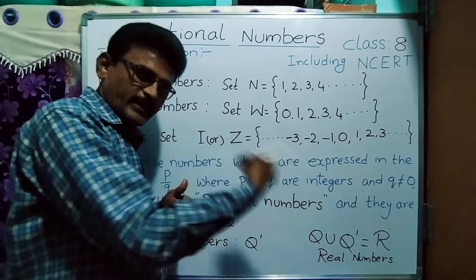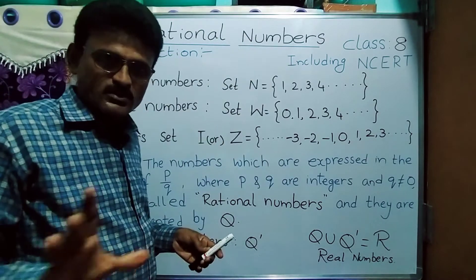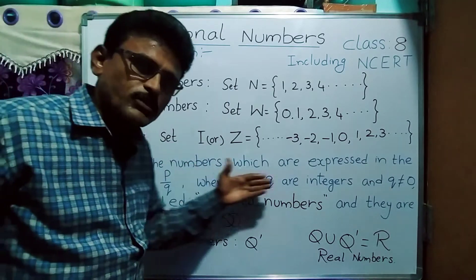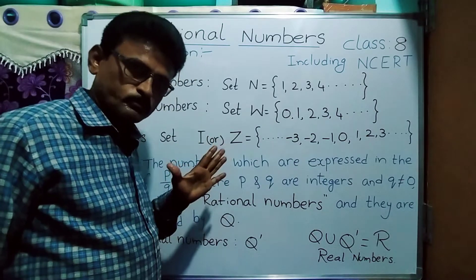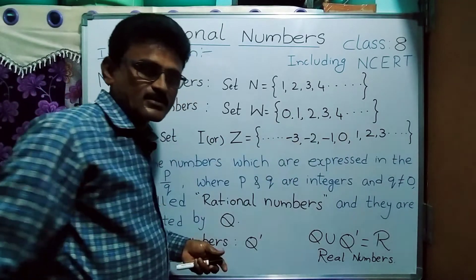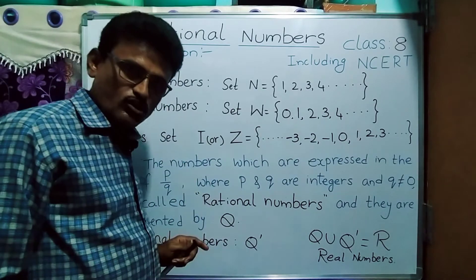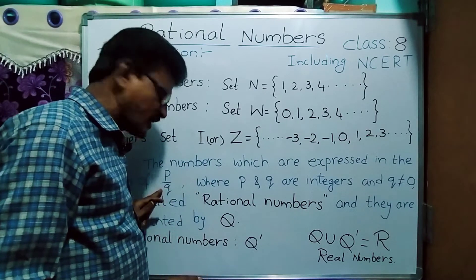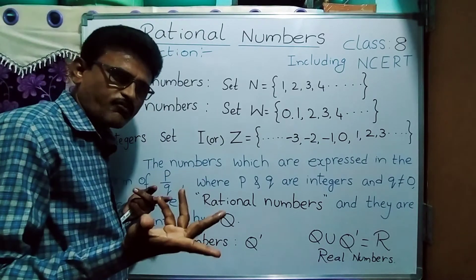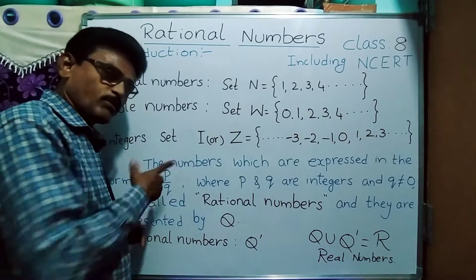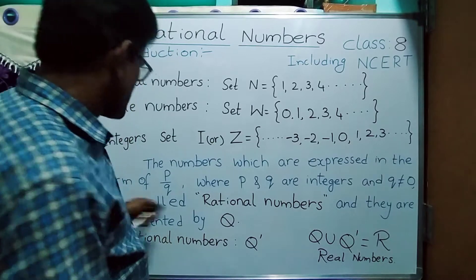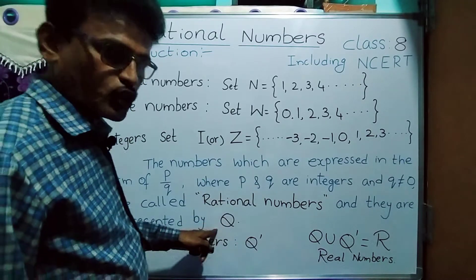After integers, we have to learn about rational numbers. What are rational numbers? The numbers which are expressed in the form of p by q, where p and q are integers, but with the condition that q is not equal to 0. Why is q not equal to 0? If you take q equal to 0, then p by q is not defined. But you can take p equal to 0, because 0 divided by anything is 0. So 0 is also a rational number.